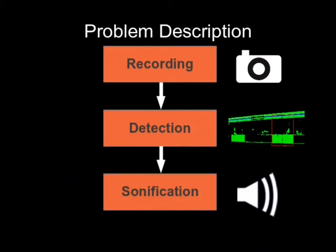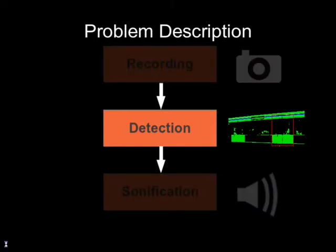After the image is recorded by the user's camera and the doors are detected, the blind user is then informed about the position of the doors via sound. In this video we will present only the detection part of the whole process.